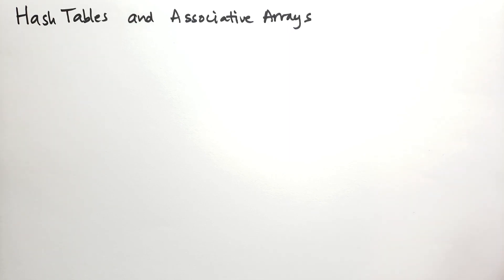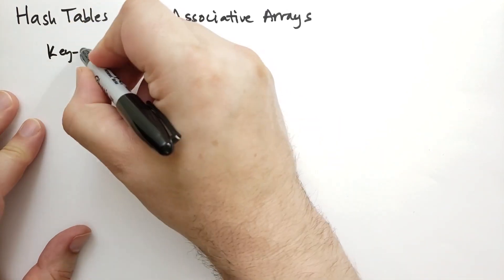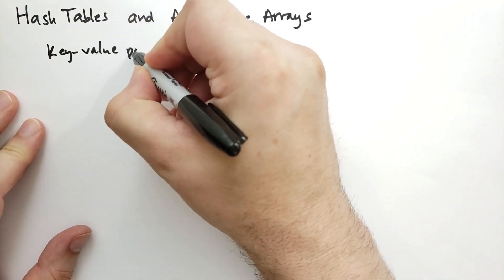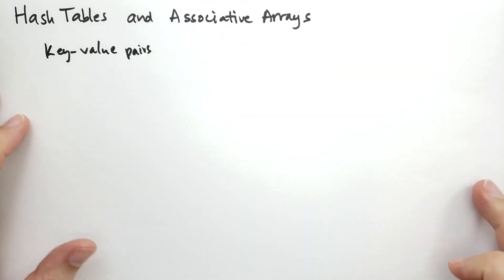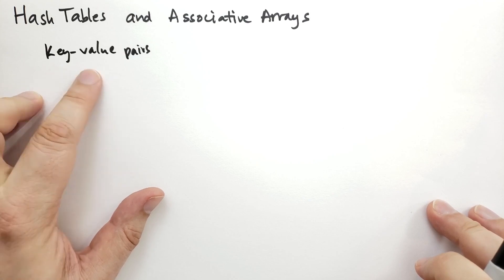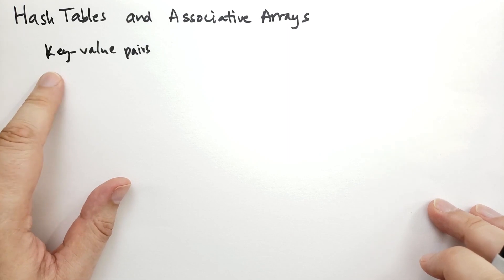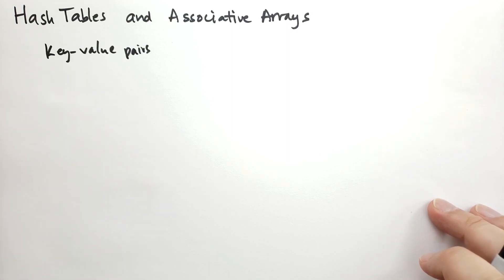In order to understand a hash table, you must first understand the associative array. Associative arrays are also called maps, or symbol tables, or dictionaries. In an associative array, the values of the arrays are key-value pairs. You can look up a value by its key, or you can assign new values by key. The key point is that in an associative array, the key must be unique — you can't have two pairs with the same key.